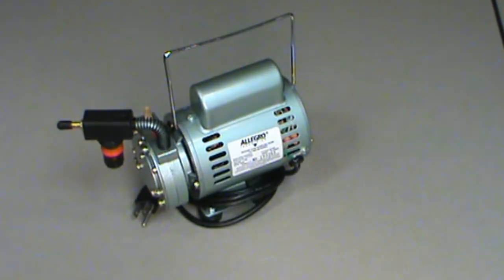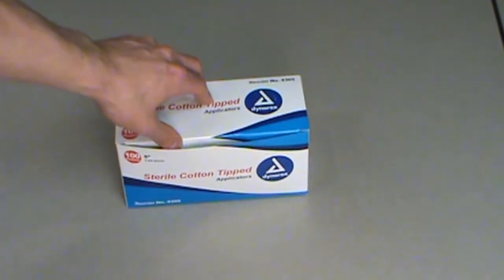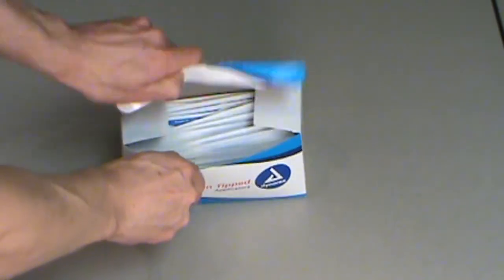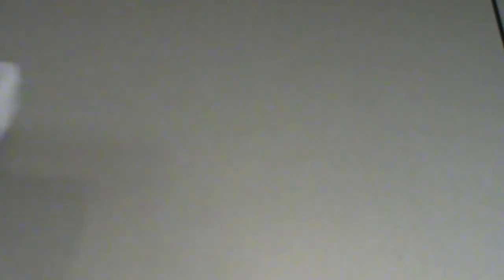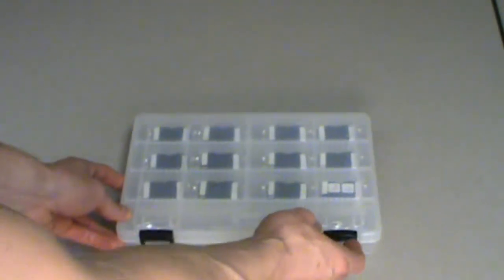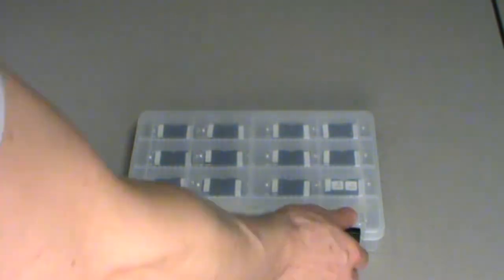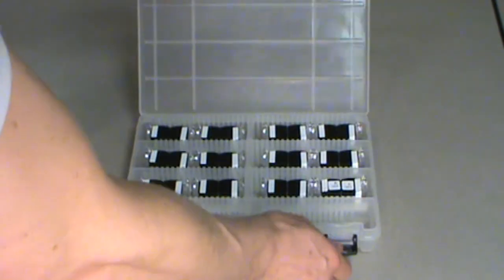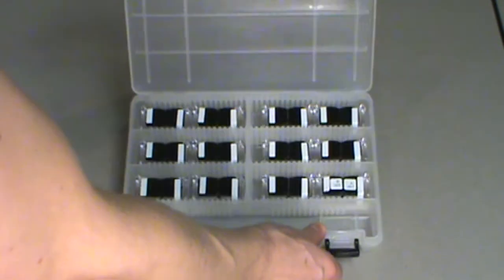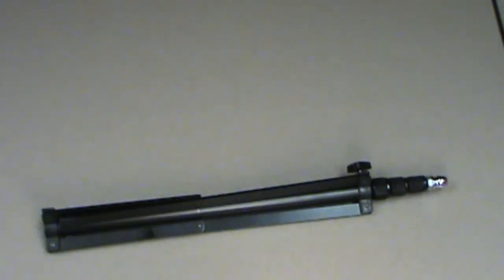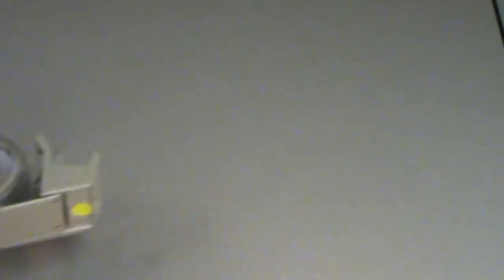You'll need a rotary vane vacuum pump, sterile cotton-tipped swabs, a set of Allegro M2 mold cartridges, a length of plastic hose, a tripod, plastic bags, tape, and a bag to put all your gear in.